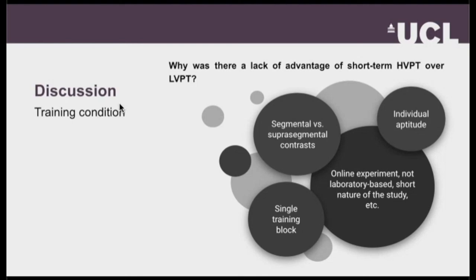Most common phonetic training studies are typically longer, involving multiple training blocks run over two or three weeks, with each session involving around 40 minutes of training at least, whereas my experiment as a whole only lasted 20 minutes. Other methodological factors to consider include that my experiment was run online rather than in a laboratory setting, and the short nature of the study means perhaps I didn't allow sufficient time for participants to build mental representations for the tonal categories.